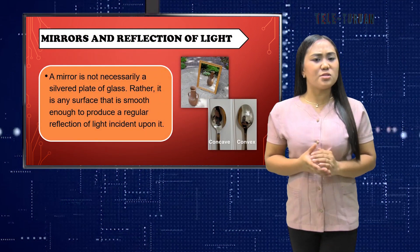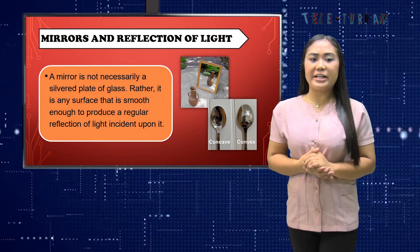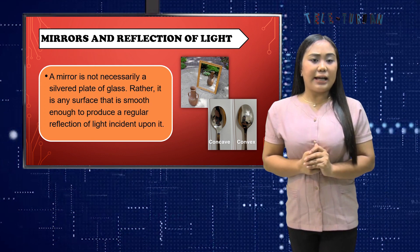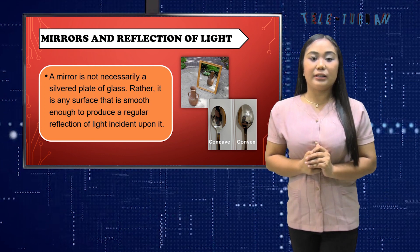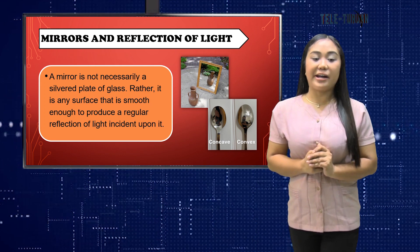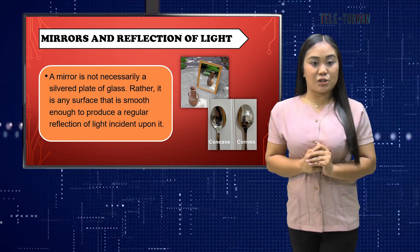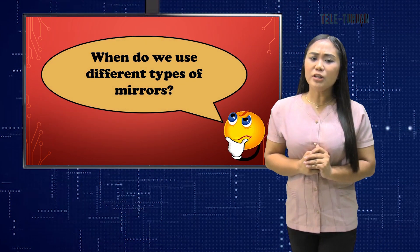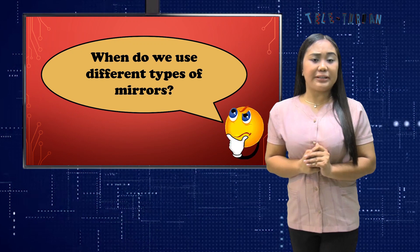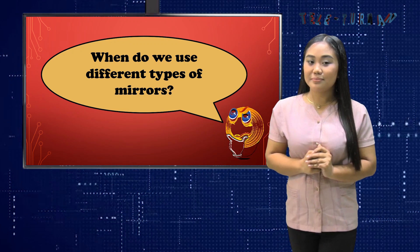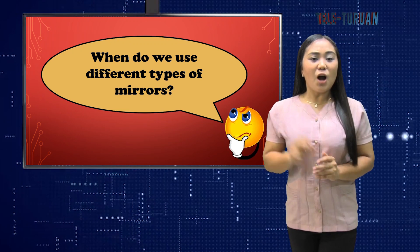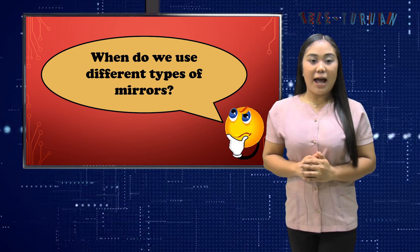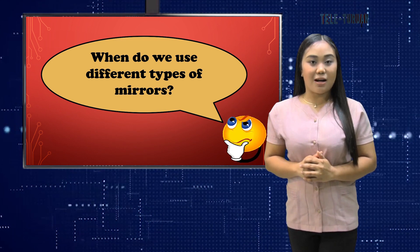A mirror is not necessarily a silvered plate of glass. Rather, it is a surface that is smooth enough to produce a regular reflection of light incident upon it. There are two types of mirrors: the plane mirror and the spherical mirror.